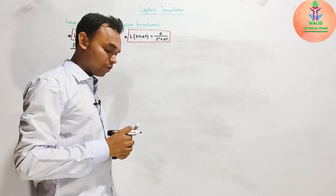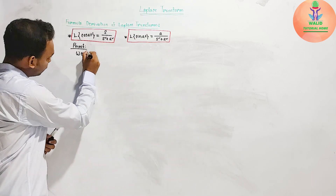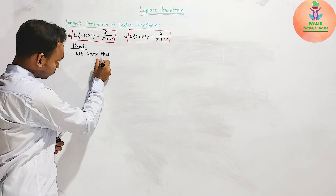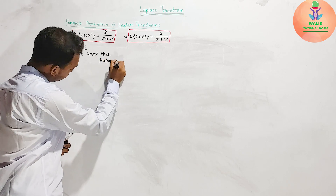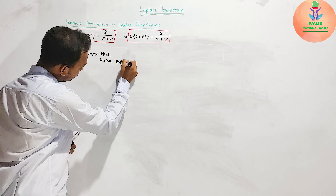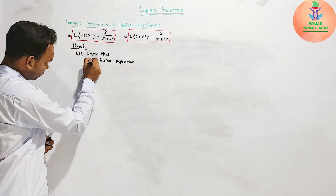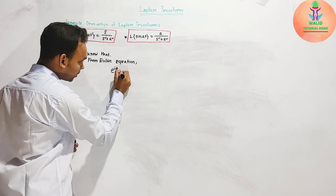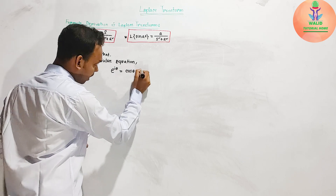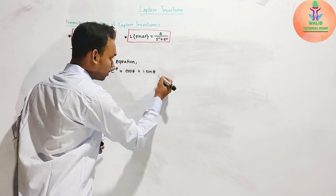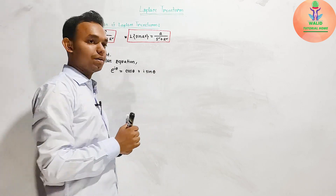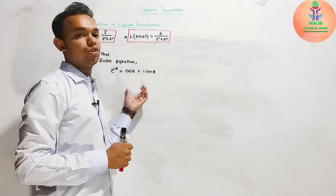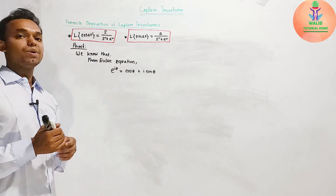So we will use the Euler equation. We know that from Euler's equation: e to the power iθ equals cos(θ) plus i·sin(θ). That is the Euler equation. Now if we replace θ by at in the Euler equation, then we get: